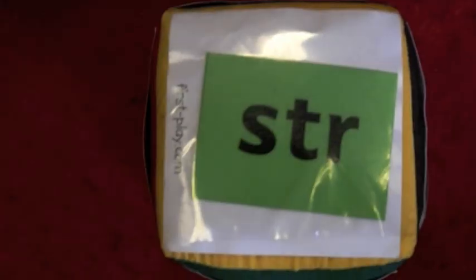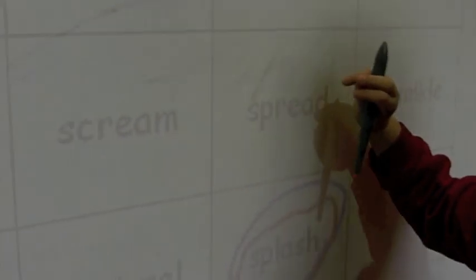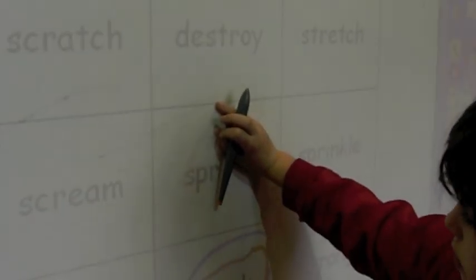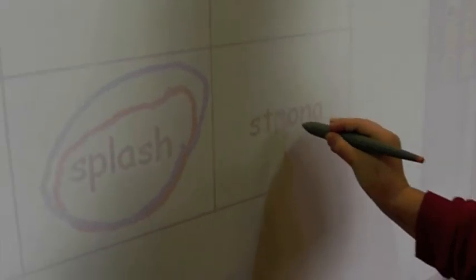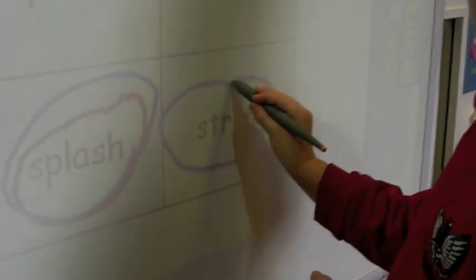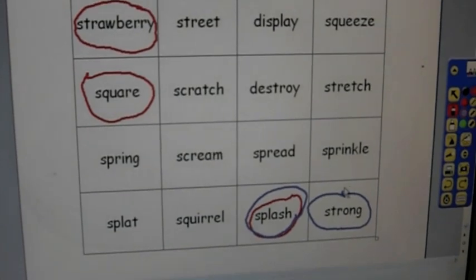Stir. Think strategically, Amy, because you're trying to get a row of three — you're in the blue team. Stir. Put a ring around it. Amy, what word is it? Strong. Strong. Good girl. Well done. Two in a row. Both teams have got two in a row — it's very, very close.